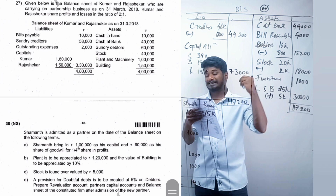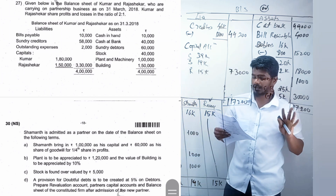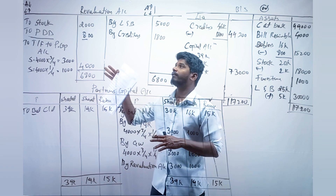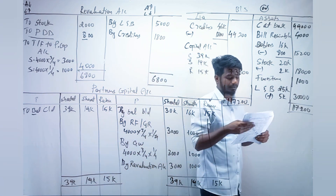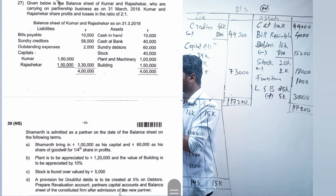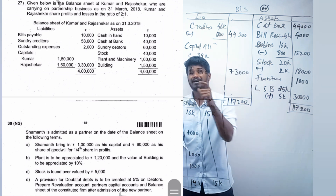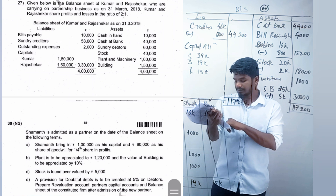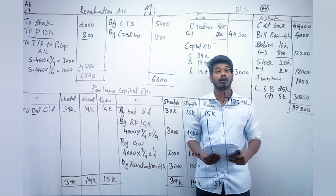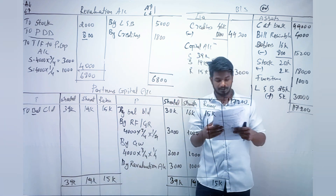The first adjustment: Shaman brings 1 lakh as capital and 60,000 as goodwill. Leave this — nothing to do in the revaluation account. Point B: plant is to be appreciated to 1,20,000. The value of plant in the balance sheet is 1 lakh, so 20,000 is increasing. We record it on the credit side because the asset is increasing.